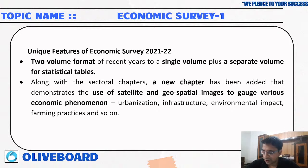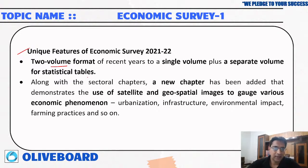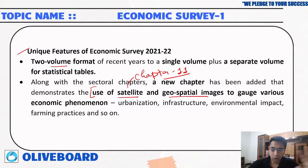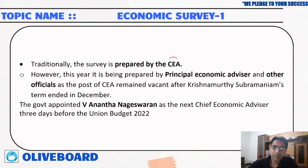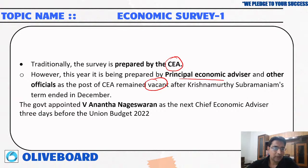Some unique features of this year's Economic Survey: it has moved from a two-volume format to a single volume plus a separate volume for statistical tables. A new chapter, Chapter 11, has been added on the use of satellite geospatial images to monitor how various projects are working. This year it was prepared by the Principal Economic Advisor because the Chief Economic Advisor position had been vacant since December. The government then appointed V. Anantha Nageswaran as the next Chief Economic Advisor, just three days before the budget.